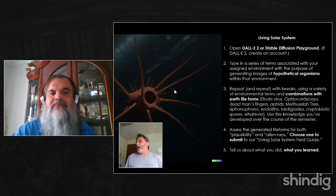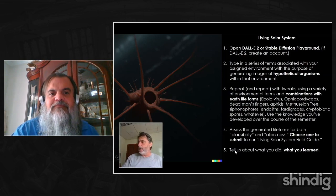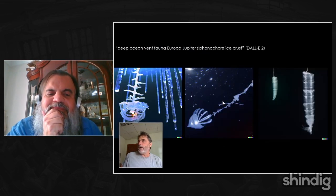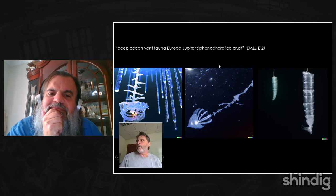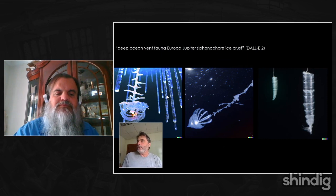We did this in class one day and discussed it the next. The images were informed by our reading in Ward's book. Key words came from the book — deep ocean vent fauna, Europa, Jupiter. We refined the prompts to include specific exotic life forms Ward discusses, like siphonophores, to get a clear concept of what exobiological creatures might look like, then storyboard those using DALL-E.